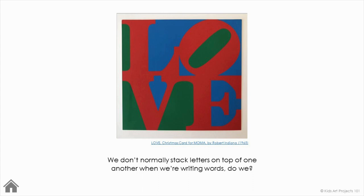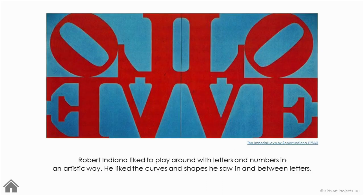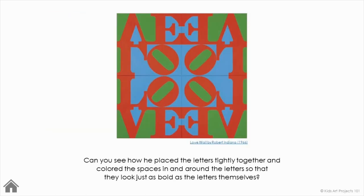We don't normally stack letters on top of one another when we're writing words, do we? Robert Indiana liked to play around with letters and numbers in an artistic way. He liked the curves and shapes he saw in and between letters. Can you see how he placed the letters tightly together and colored the spaces in and around the letters so that they look just as bold as the letters themselves?